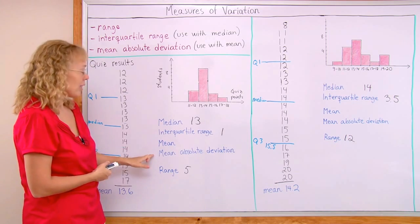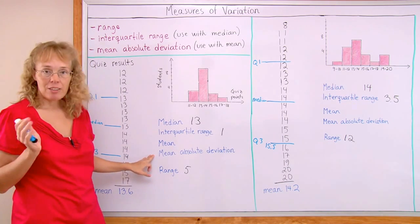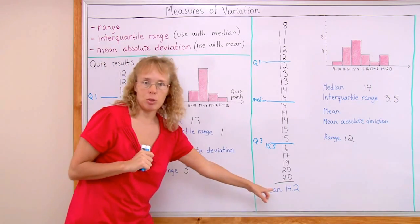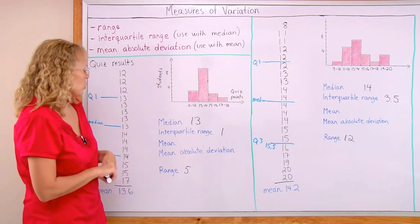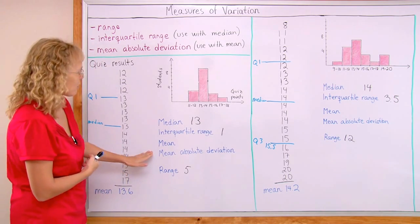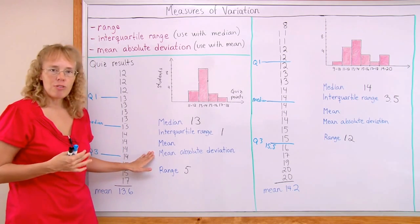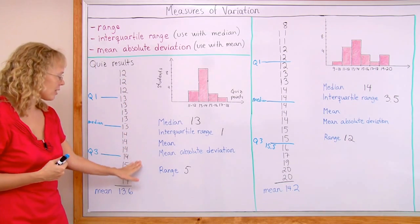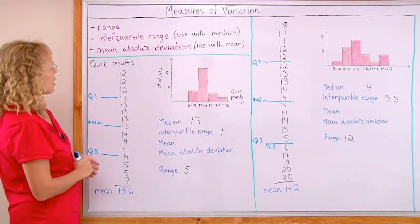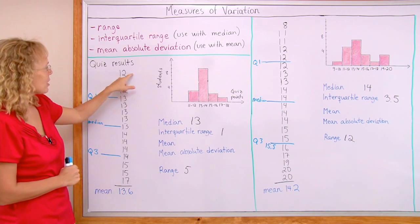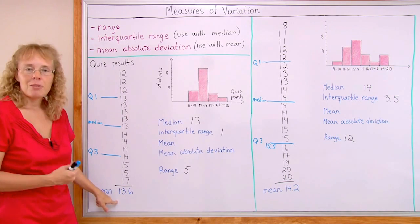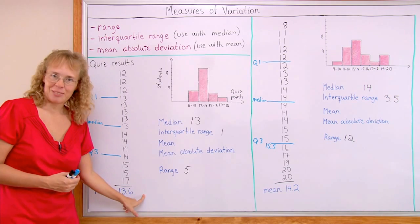Now the mean and mean absolute deviation. I have already calculated the mean. Here is 13.6. Here is 14.2. So now we go to mean absolute deviation, this difficult monster word. Basically what it means is how far are these data values on average from the mean? We calculate it by calculating first the difference of each value to the mean. And then we take the average of the differences.